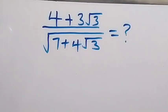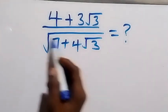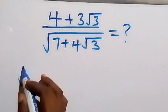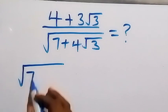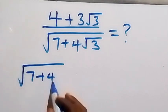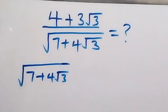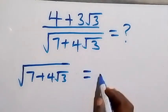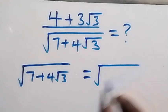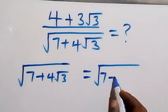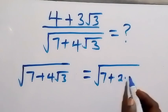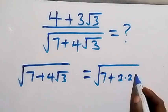Hello, you are welcome. We want to solve this nice math problem involving square roots. Let's simplify the denominator first. From the denominator we have square root of 7 plus 4 root 3. We can simplify this by writing 4 as 2 times 2, giving us square root of 7 plus 2 times 2 times root 3.